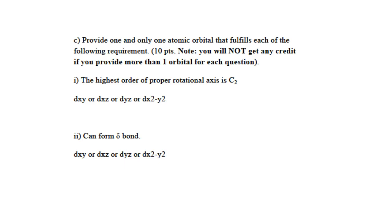For example, px has C2 along the x axis. D orbitals could fulfill this requirement, at least some of them: dxy, dyz, dxz, and dx2 minus y2 will fulfill this question. Dz squared does not because it has a C infinity axis along the z. So all you need to do is write down any one of the four d orbitals.